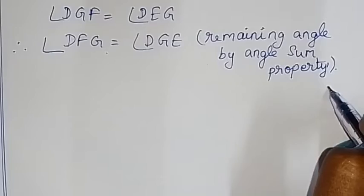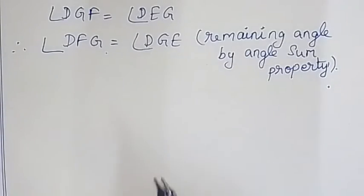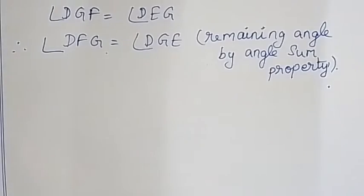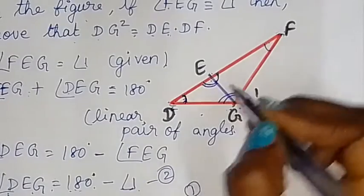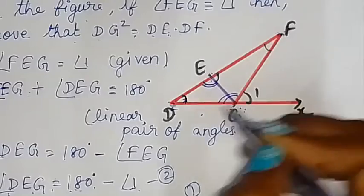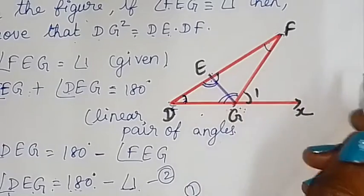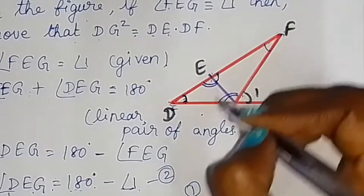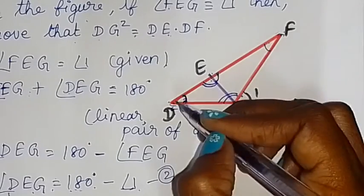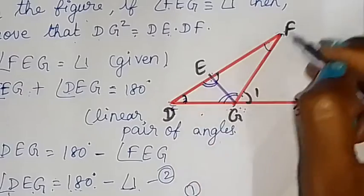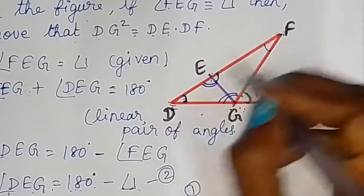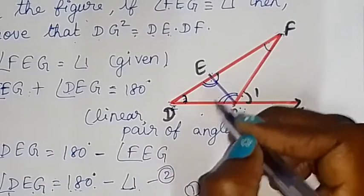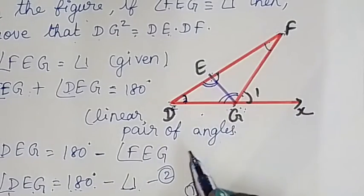So the two triangles DEG and DFG are similar by AA similarity — two corresponding angles are equal and one common angle is equal, so the remaining angle is equal. Therefore triangle DFG is similar to triangle DGE.